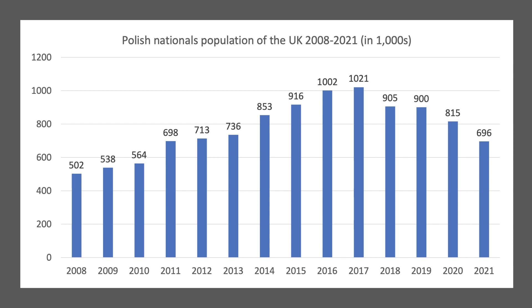Poland, of course, joined the EU in 2004. And in the succeeding years there was a sizable, pretty much a trend increase year on year in the number of Polish nationals living and working in the UK. It peaked at just over a million in 2017.